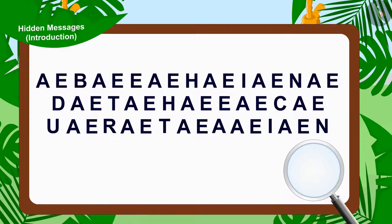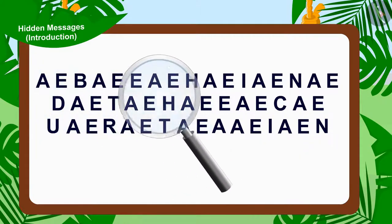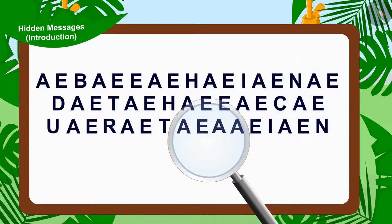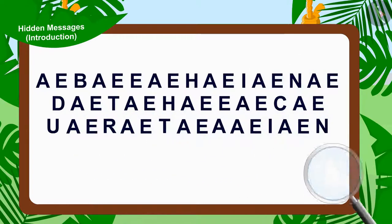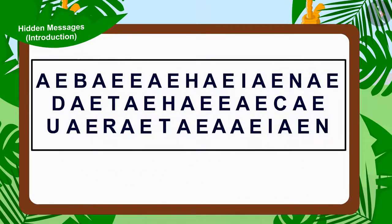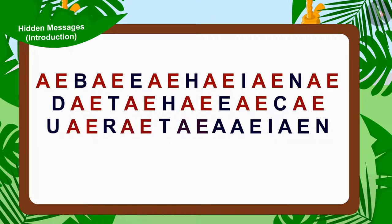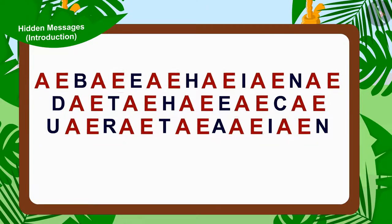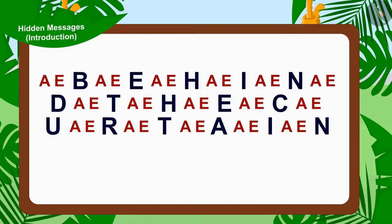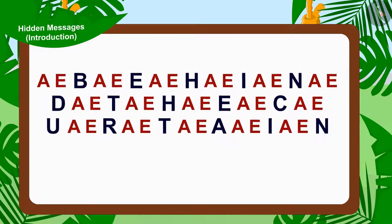Come, let's see Appu's first letter carefully. Children, can you see some form of repetition here? The alphabets A and E are being repeated every time, and in every repetition, a new alphabet is getting added after A, E.